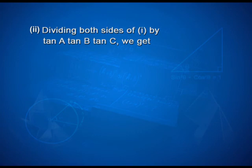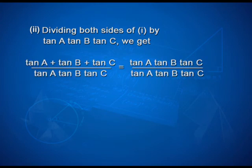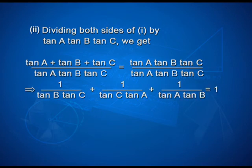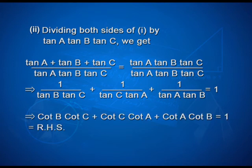For the second part, dividing both sides of the first equation by tan A · tan B · tan C, we get 1/(tan B tan C) plus 1/(tan C tan A) plus 1/(tan A tan B) equals 1. Since cot θ equals 1/tan θ, this gives cot B cot C plus cot C cot A plus cot A cot B equals 1.